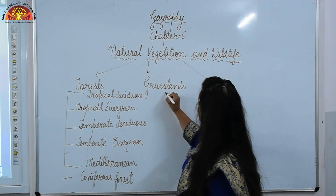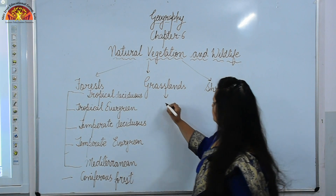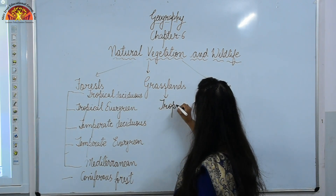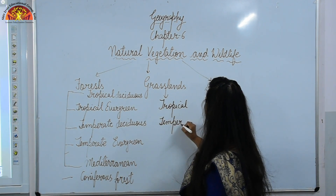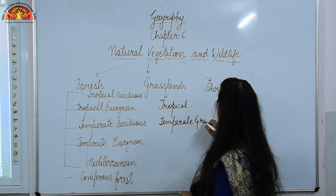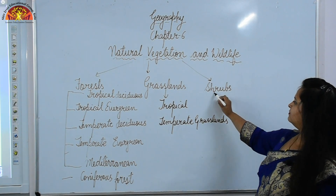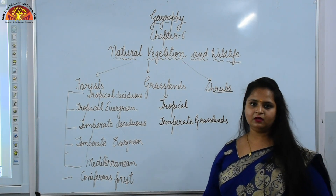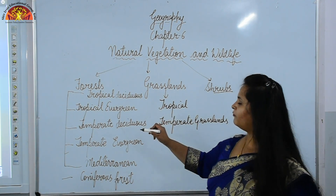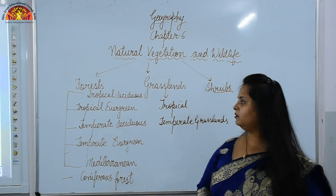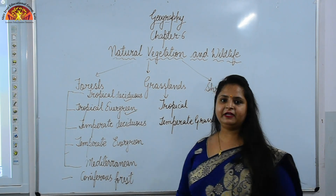For grasslands, again tropical and temperate grasslands are there. And in shrubs, you are going to read about tundra vegetation. Now let us start the chapter with tropical deciduous and tropical evergreen forest.